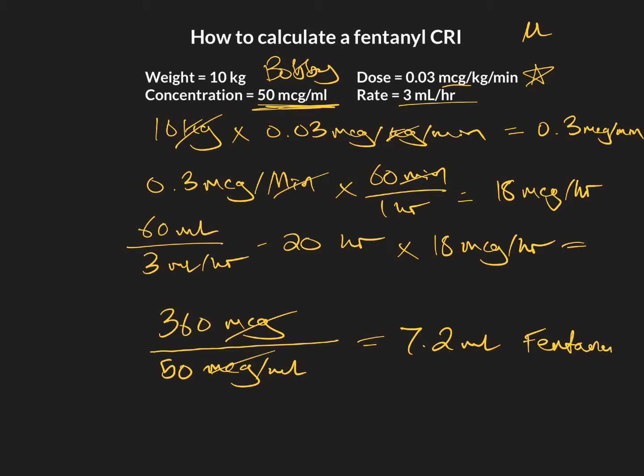So we're going to take that 7.2 mils — don't forget to log it — add it into our 60 ml syringe, and we're going to fill up the rest with saline, which is 52.8 mils of saline.